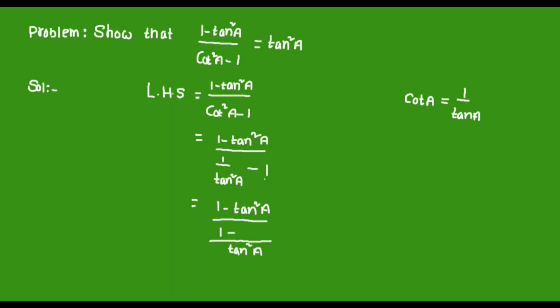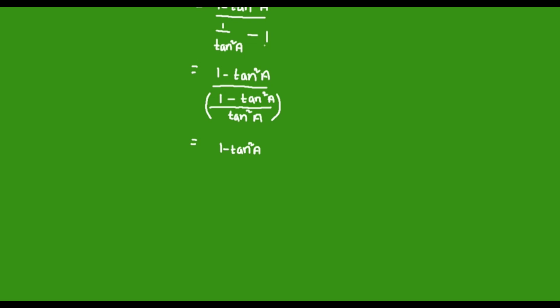We know that 1/(a/b) can be written as b/a. By basing on this, this part can be written as (1 - tan²a) multiplied by tan²a/(1 - tan²a).